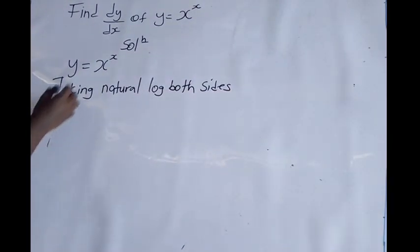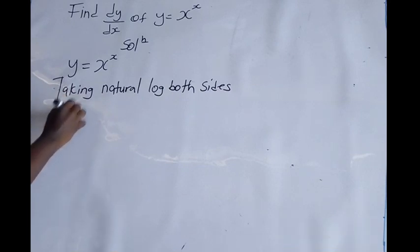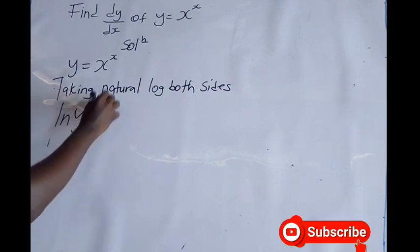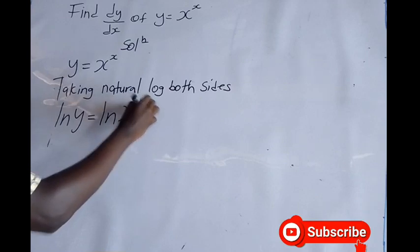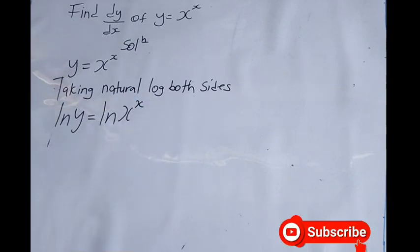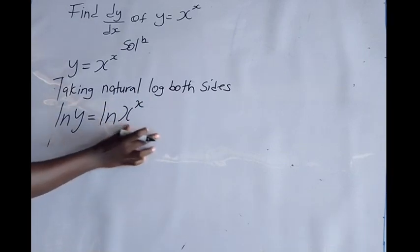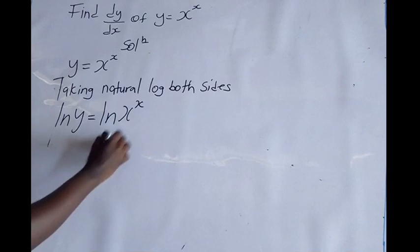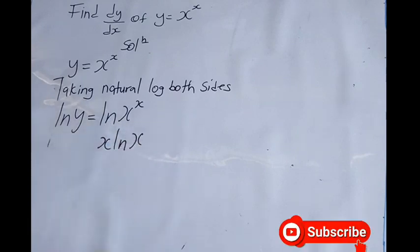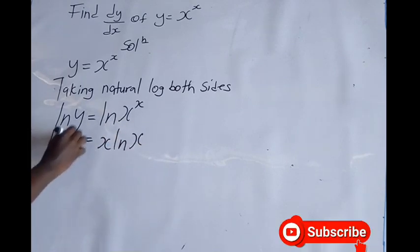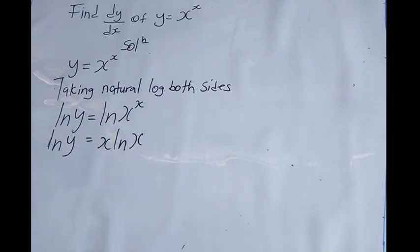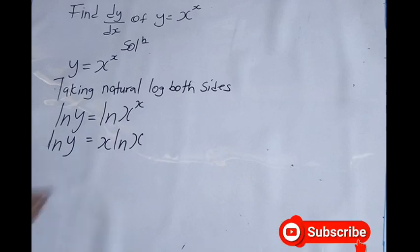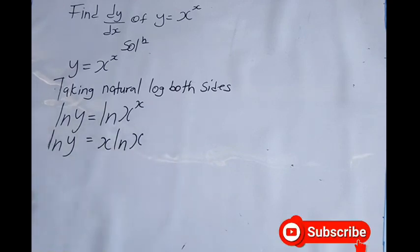We have ln(y) equals ln(x^x). When we have ln(x^x), we can write it as x·ln(x). So this gives us ln(y) equals x·ln(x). Since we have x and y together in one equation, we use the implicit form of differentiation.